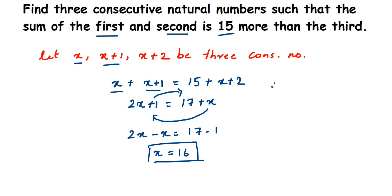So 2x minus x is x, and 17 minus 1 is 16. Therefore x equals 16. The second number is x plus 1, which is 16 plus 1 equals 17. The third consecutive number is x plus 2, which is 16 plus 2 equals 18. So 16, 17, and 18 are the three consecutive numbers — that is what we had to find.